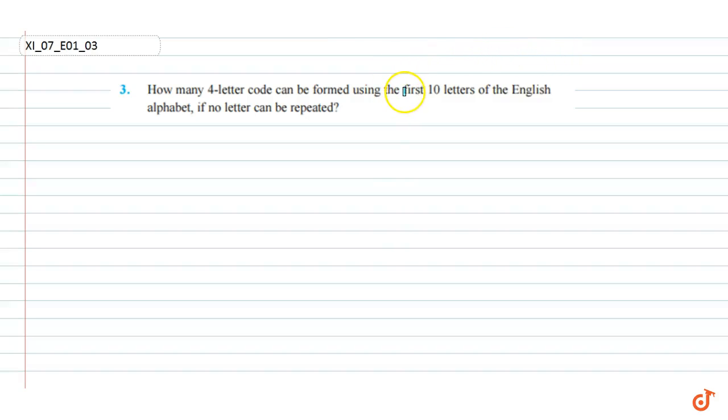In this question it is given that we have the first ten letters of the English alphabet and we have to form a four-letter code. In how many ways can we form a four-letter code if no letter can be repeated?